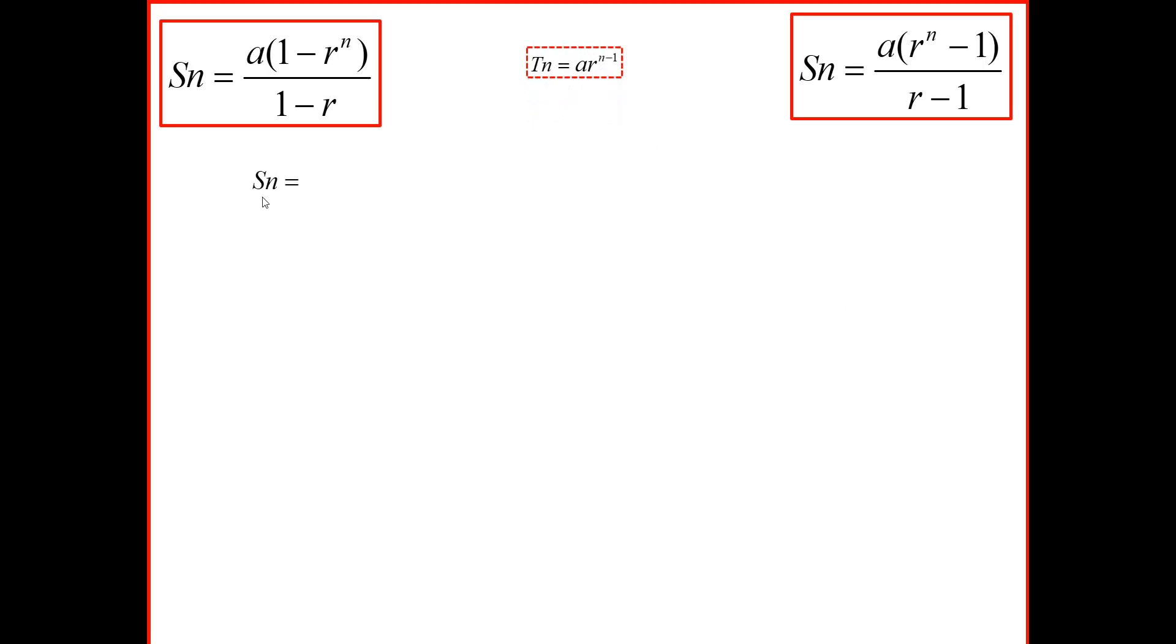So to find the sum to n terms of a geometric series, we're going to add the first term to the second to the third, and it goes on right until the nth term, which will be our last term. The first term in a geometric series is represented by a. The second term, we multiply this by the common ratio, which would be ar. The third term would be ar squared, and the next one will be ar cubed, and the pattern will go on. So we're going to indicate that with three dots.